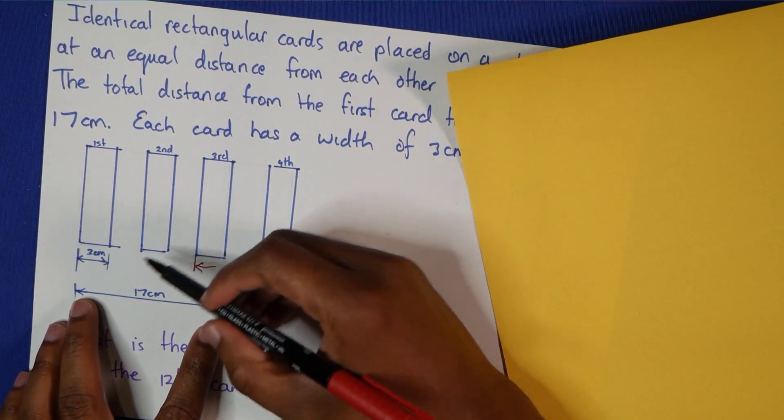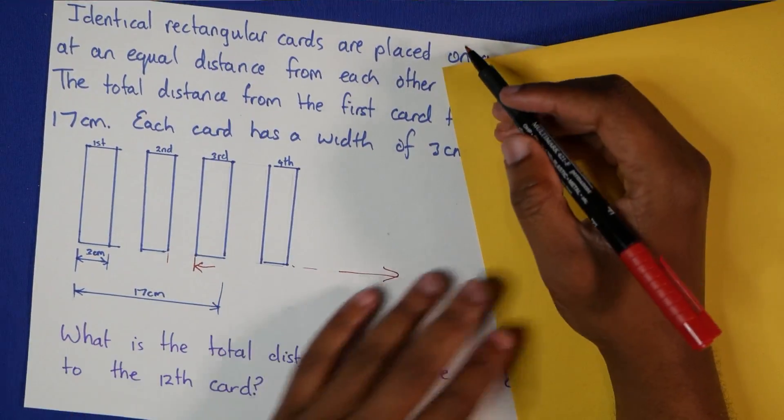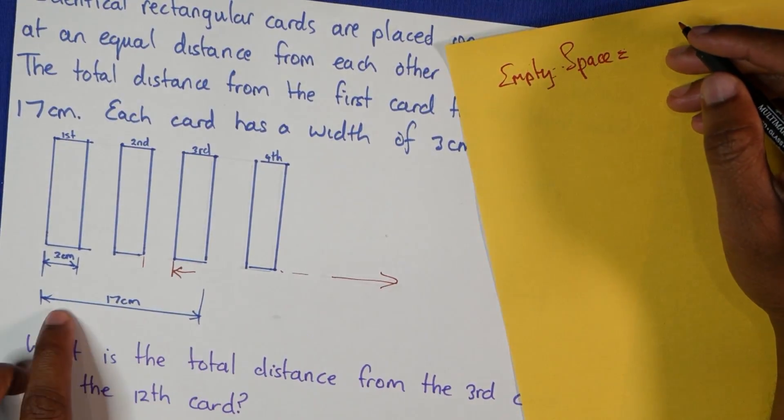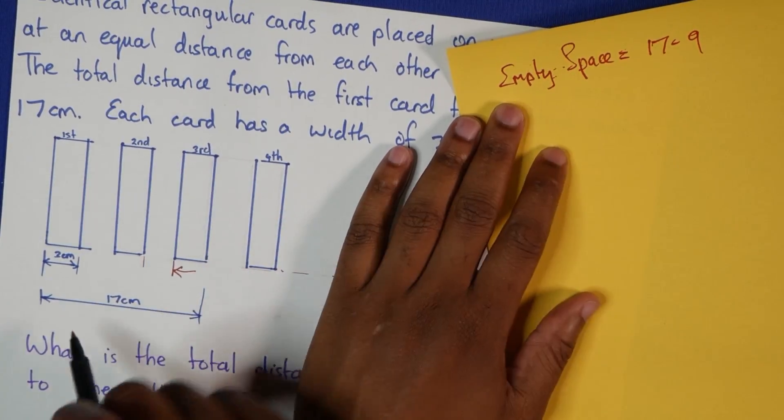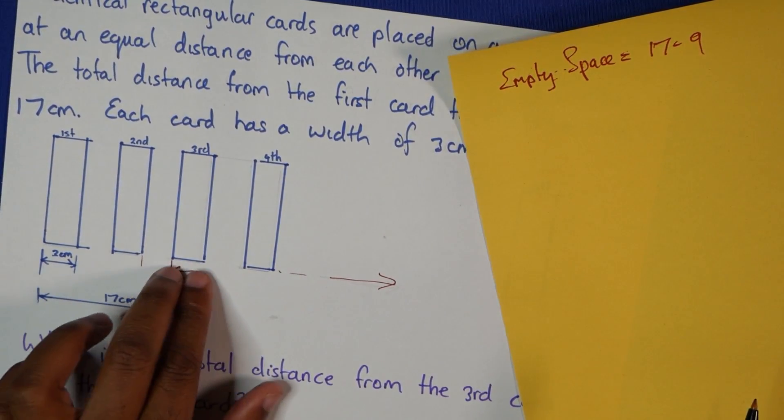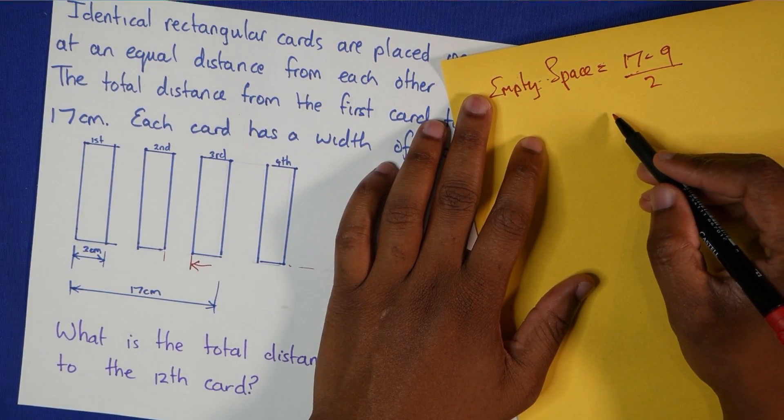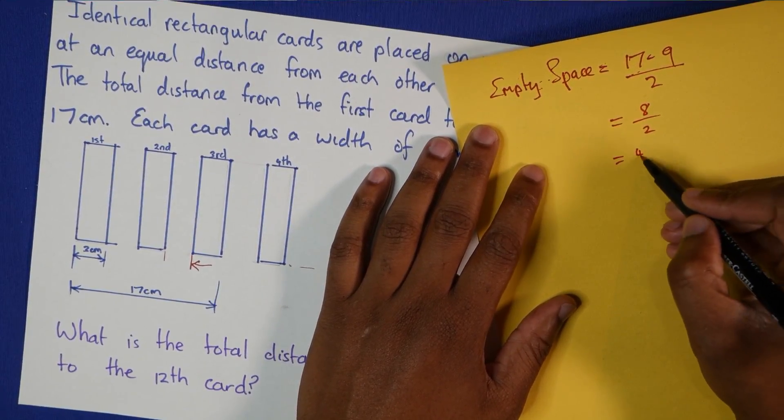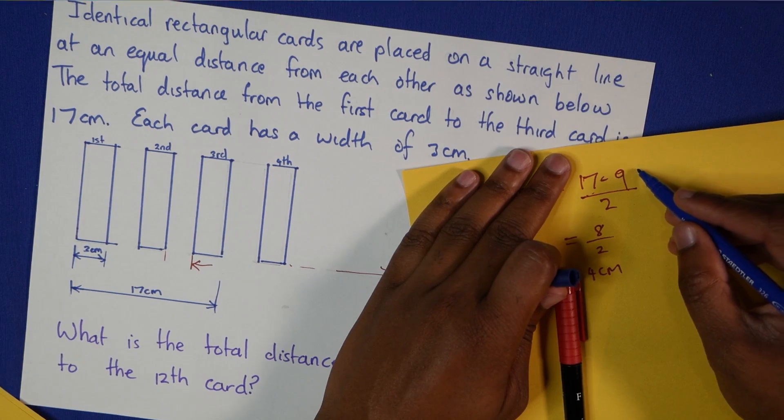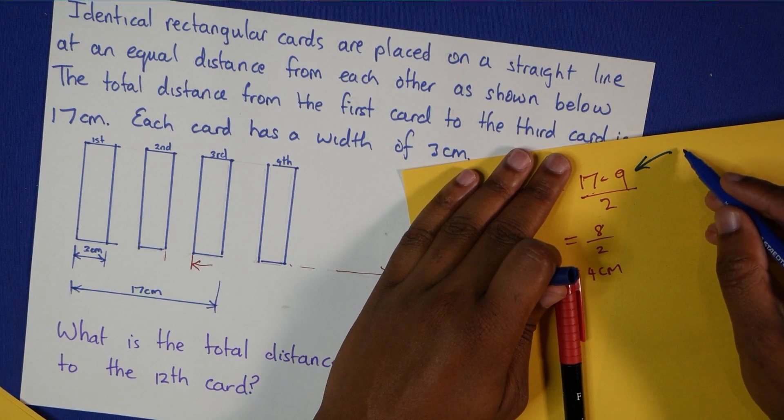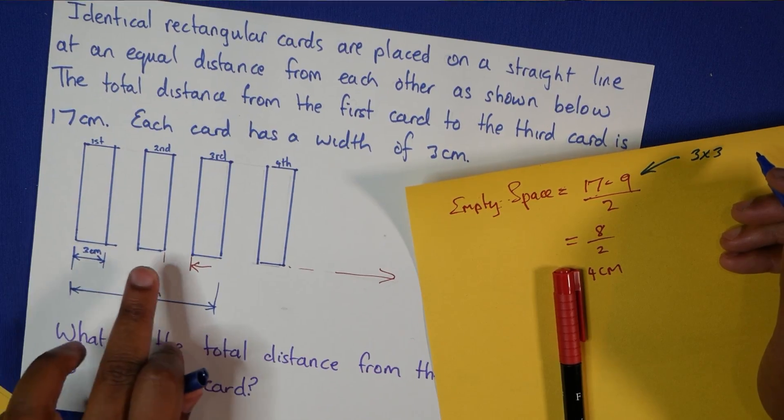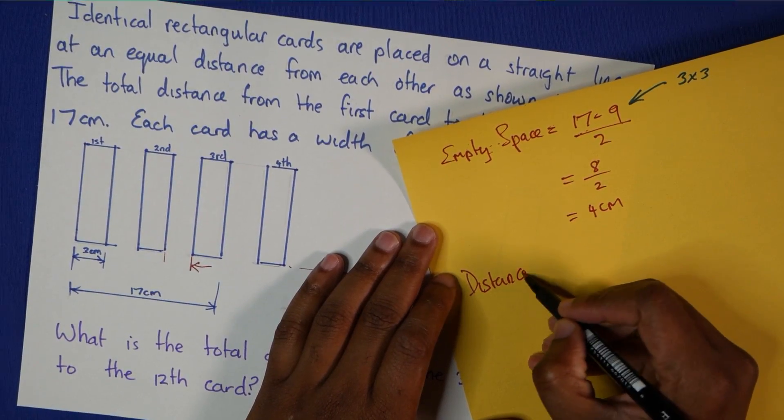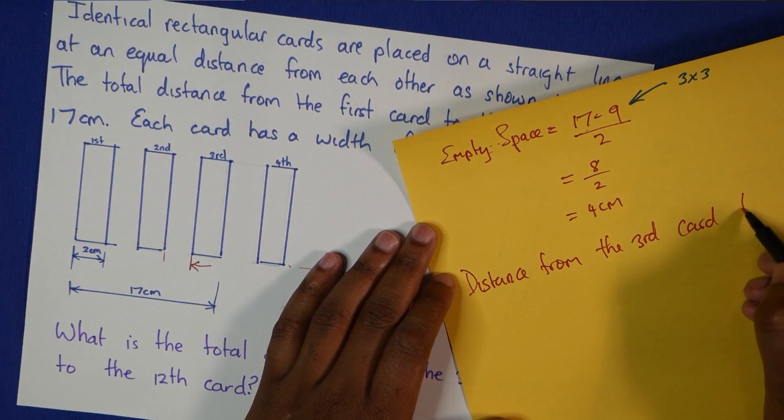So the first thing you need to do is figure out what's the distance for empty space. And the empty space would actually be equal to 17 take away 9, because we have 3 by 3 here, over 2, because we have two empty spaces. This gives 8 over 2, which is 4 centimeters. Remember, this 9 here is actually 3 by 3, three by the three cards.